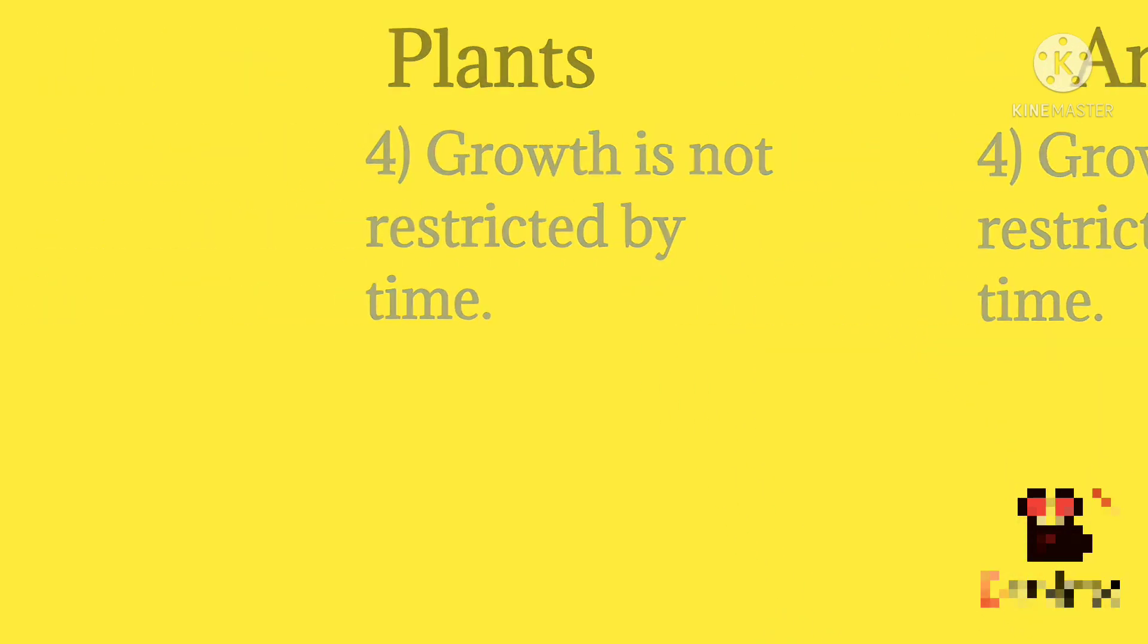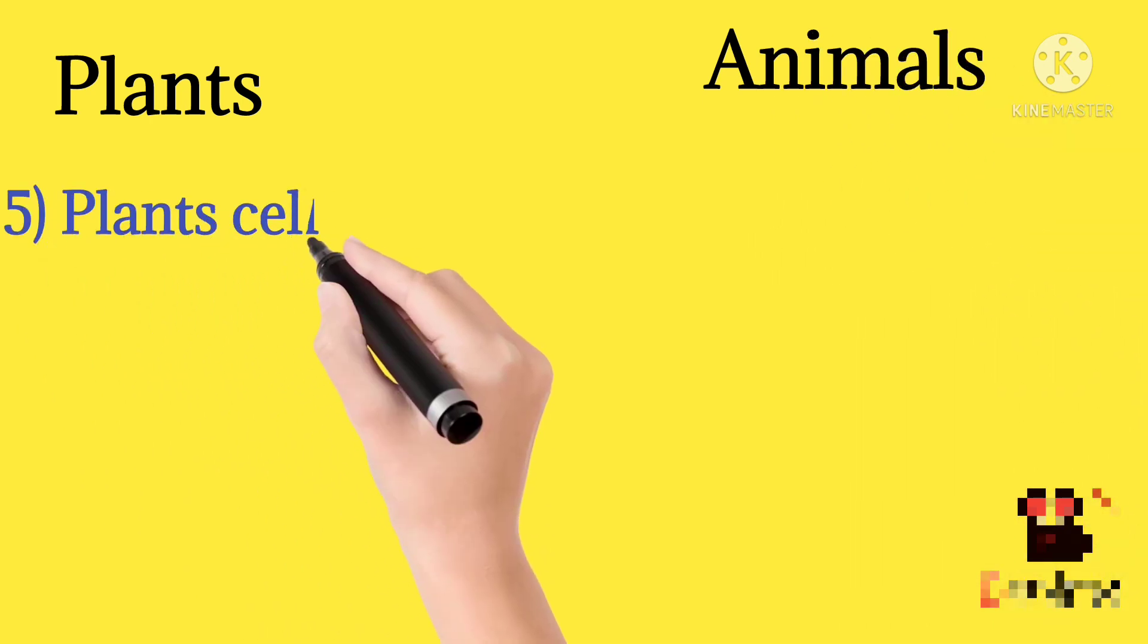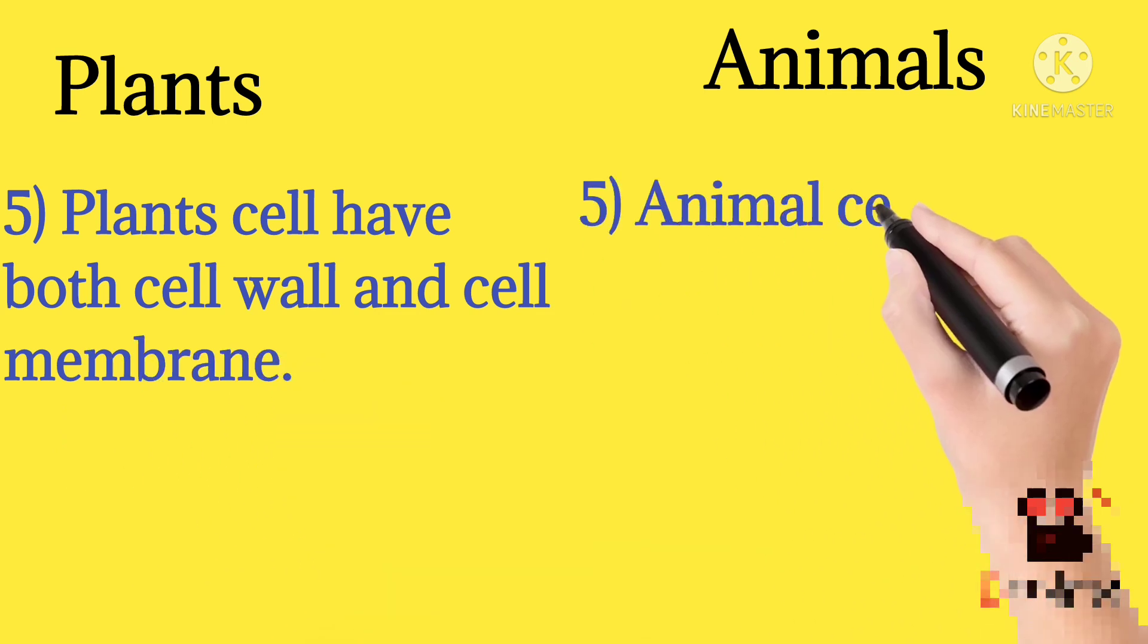Plant cells have both cell wall and cell membrane. Animal cells have no cell wall, they only have cell membrane.